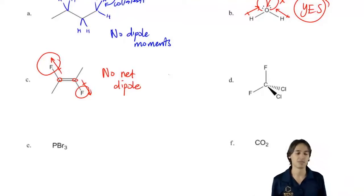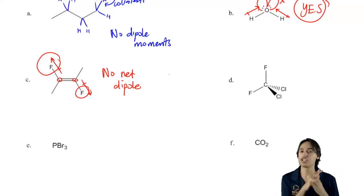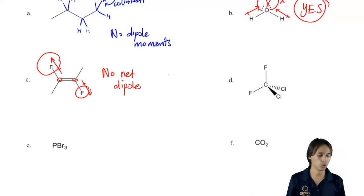So what I'm trying to say is that overall there's going to be no net dipole even though there are dipole moments, because the dipoles perfectly cancel out. So there's no area where I would have a part of the molecule that has way more electrons.